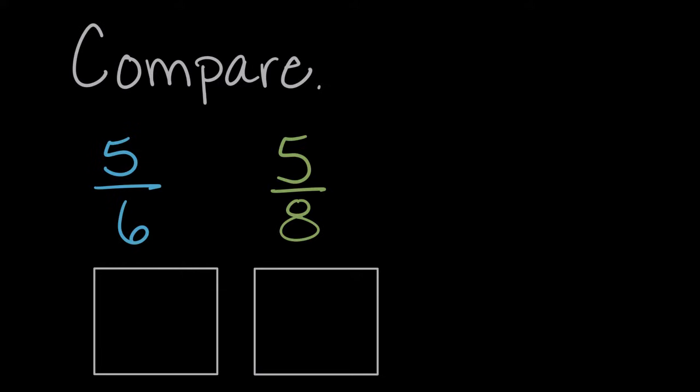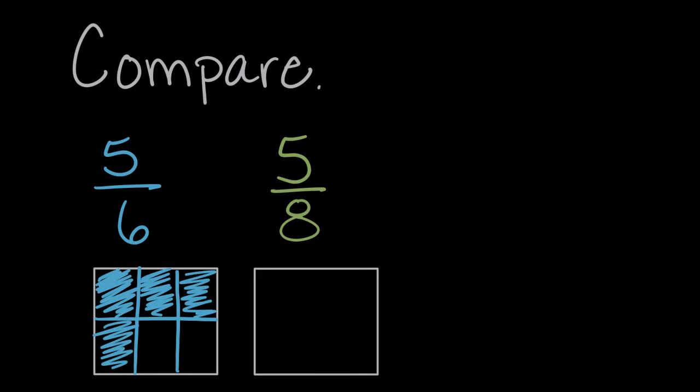So for five sixths, if we divide this whole, and we were using the example of cake, the cake into six equal-sized pieces. Not sure if those are perfect, but let's say those are six equal-sized pieces. Five sixths is talking about five of those pieces. So one, two, three, four, five.